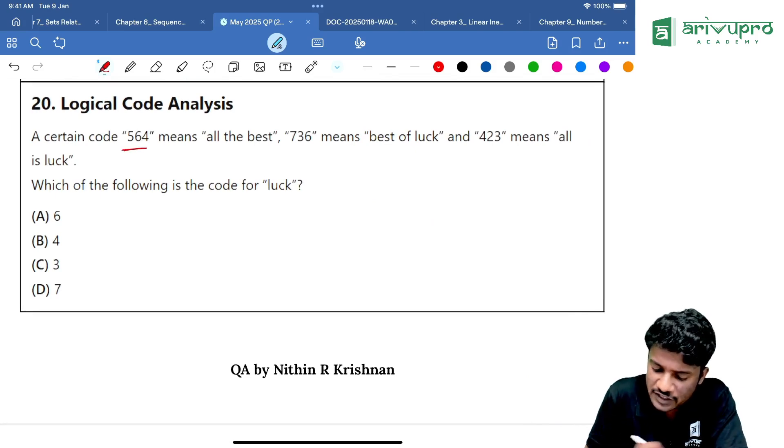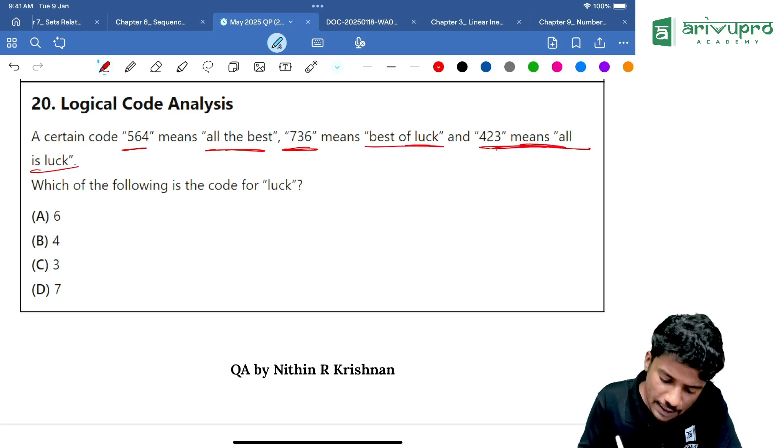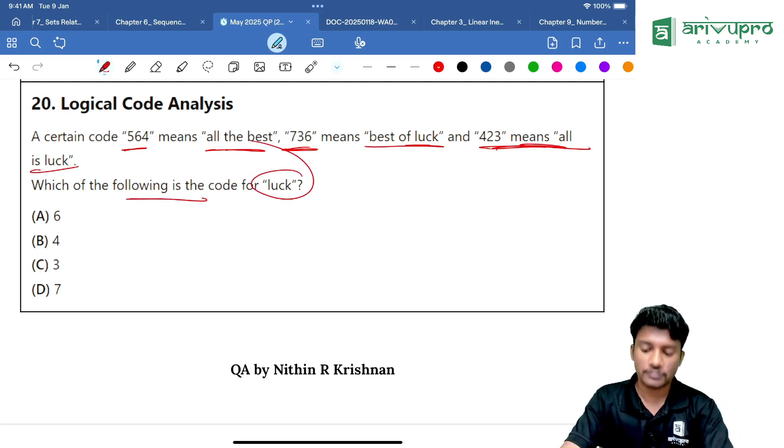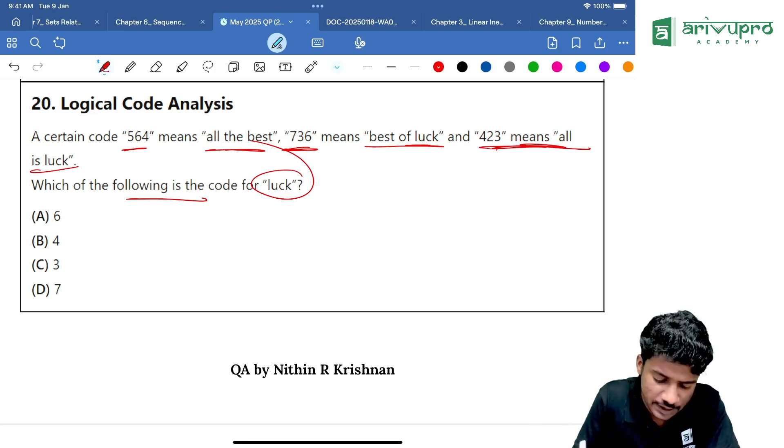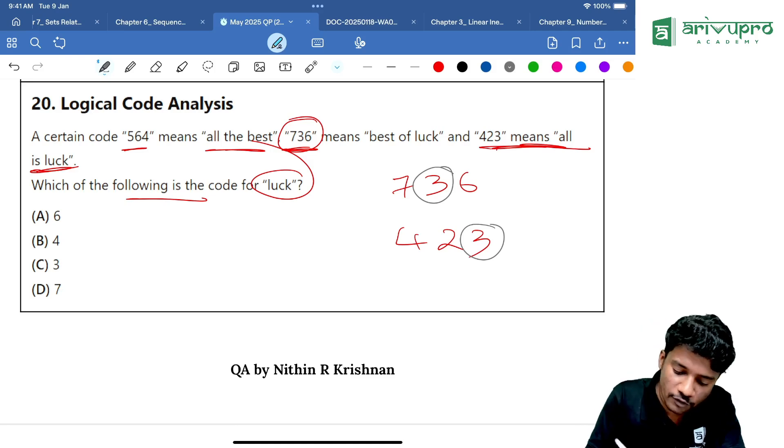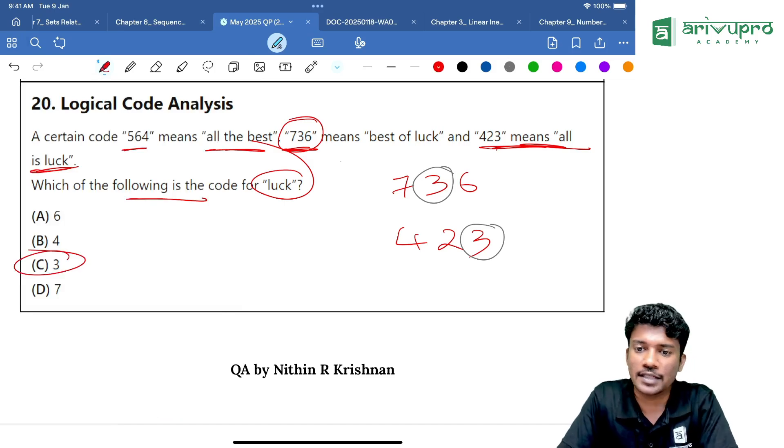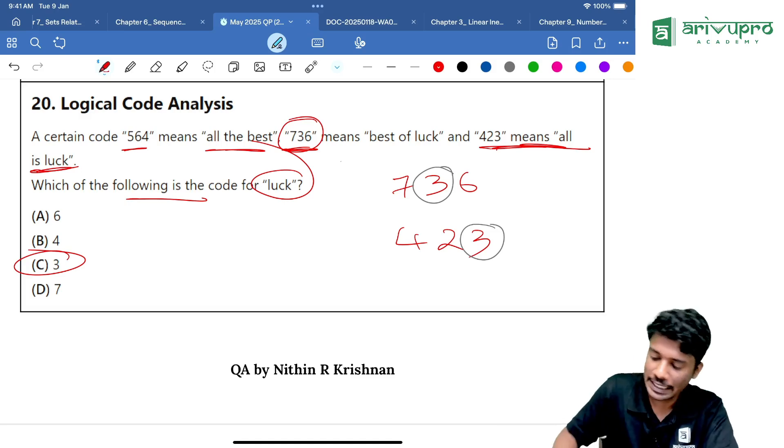A certain code, 5-5-6 means all the best. 7-3-6 means best of luck. 4-2-3 means all is luck. Then what is the code for luck? Luck is present in two words, best of luck. Which number is common in both? In 7-3-6 and 4-2-3, which number is common? 3 is common. That means what is the code for luck? Luck is 3. Option C, 3 is your answer.